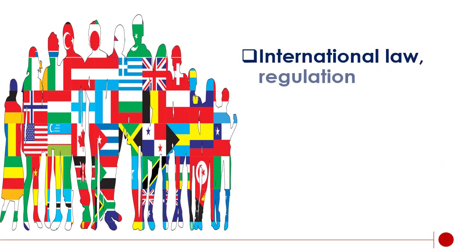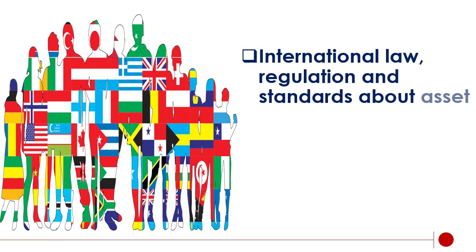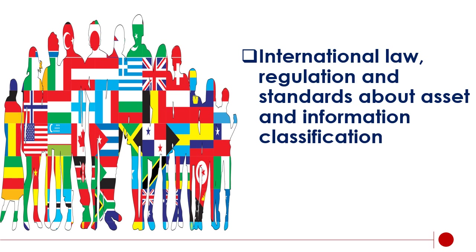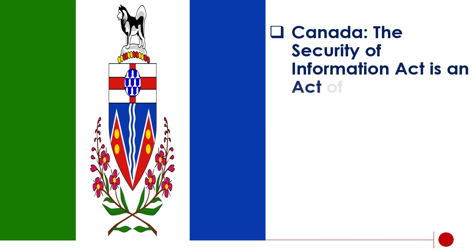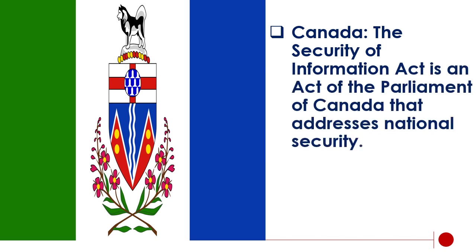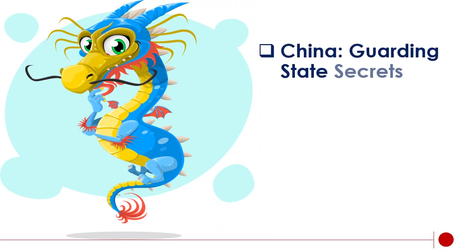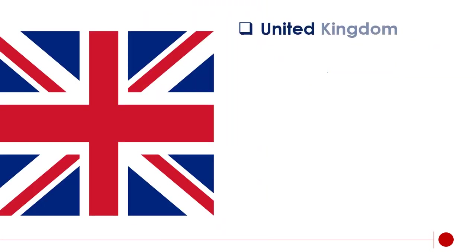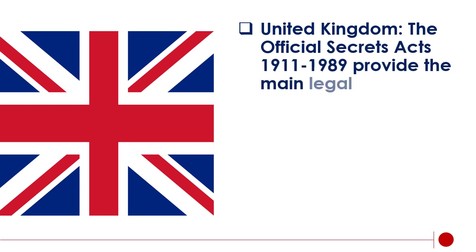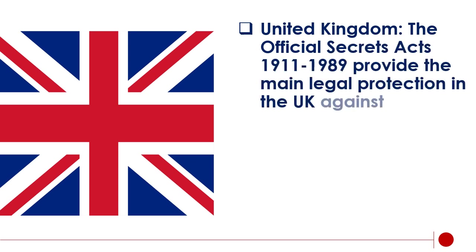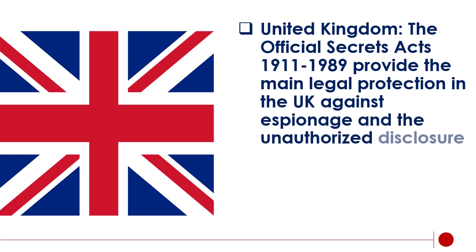International laws, regulations, and standards address asset and information classification. In Canada, the Security of Information Act is an act of Parliament that addresses national security, guarding state secrets. In the United Kingdom, the Official Secrets Acts 1911–1989 provide the main legal protection against espionage and the unauthorized disclosure of information.